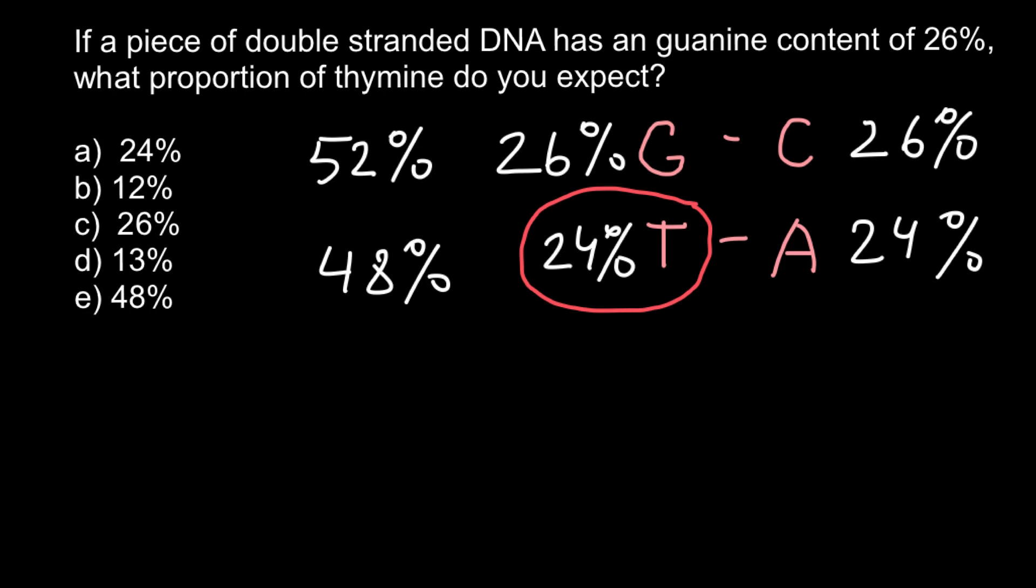Basically, as you see, if we know only the percent of one base—it can be any base—we can instantly tell the percentage of all the rest of the bases in this fragment of double-stranded DNA. So as you see, the correct answer would be answer A.